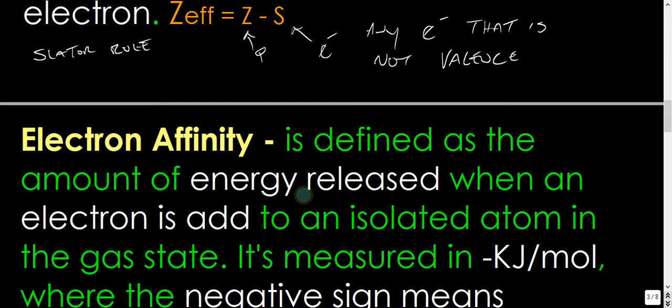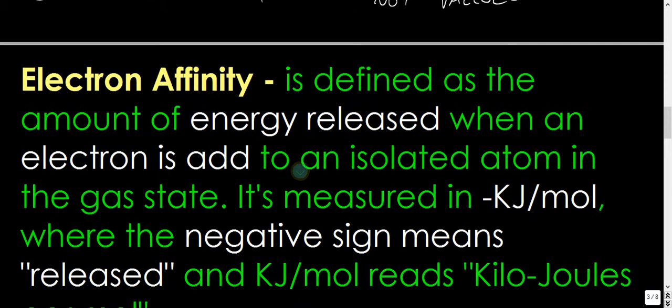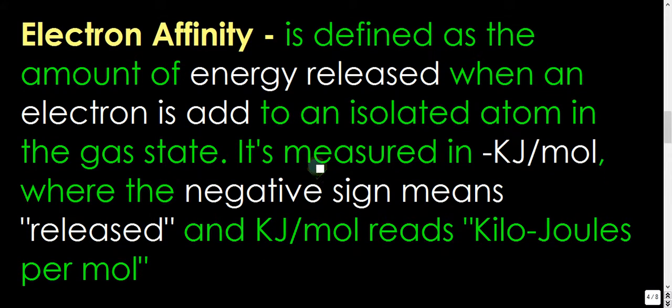Electron affinity. Now, people get this mixed up with electronegativity all day long. I see so many videos on YouTube. It's pathetic. Basically, electron affinity is the actual energy released when an electron is added to an isolated atom. The atom is all by itself in a gas state. And it's measured in negative kilojoules per mole, and the negative sign really just means released. So, the more negative it is, the more energy is released.